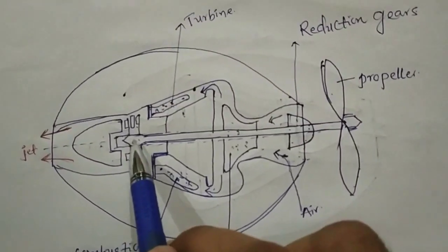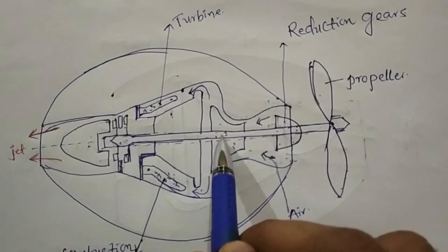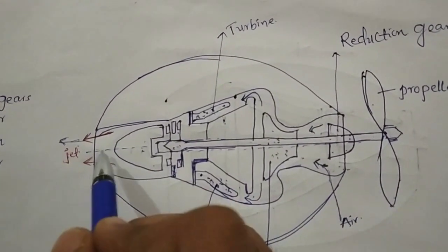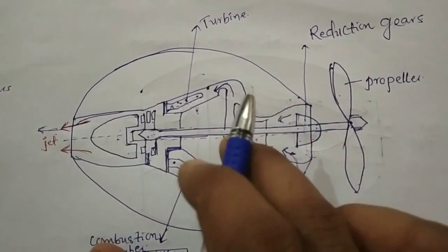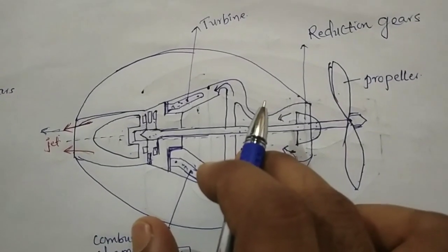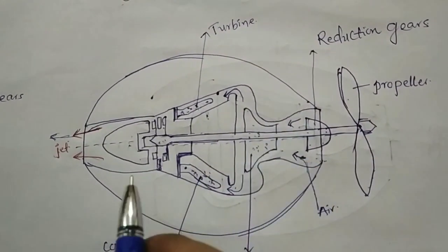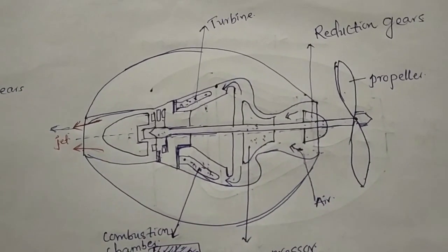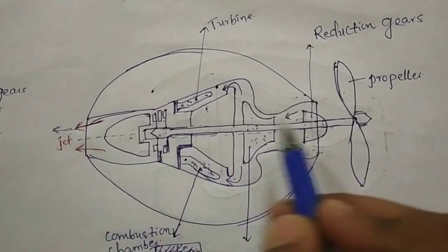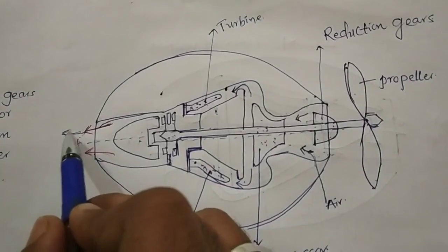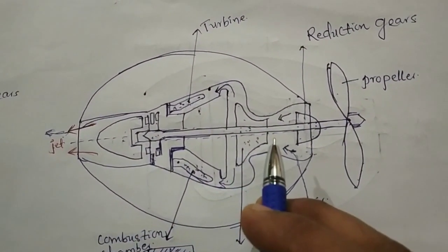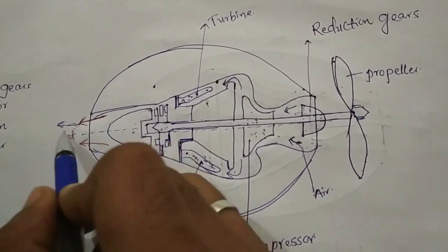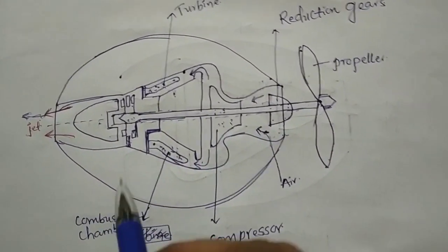Whatever power is produced in the turbine is used to run the compressor and to run the propeller shaft. When the jet moves in the backward direction, this is the action — and by Newton's third law, every action has an equal and opposite reaction. Just as when you kick a boat backward you move forward, or push your legs backward while swimming your body moves forward — here, when the jet moves backward, the aircraft moves in the forward direction.